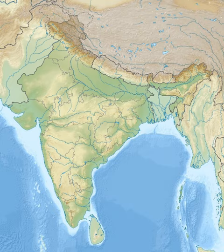The 2011 Sikkim earthquake, also known as the 2011 Himalayan earthquake, occurred with a moment magnitude of 6.9 and was centered within the Kanchenjunga Conservation Area, near the border of Nepal and the Indian state of Sikkim, at 18:10 IST on Sunday, 18 September. The earthquake was felt across northeastern India, Nepal, Bhutan, Bangladesh, and southern Tibet.